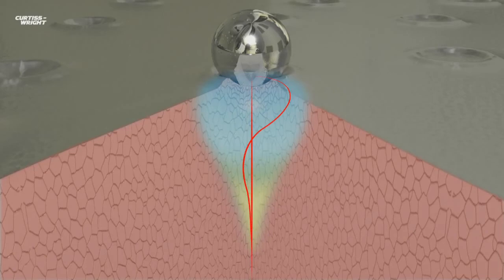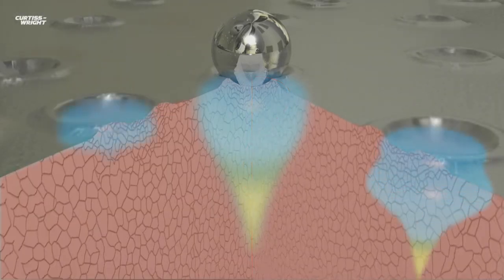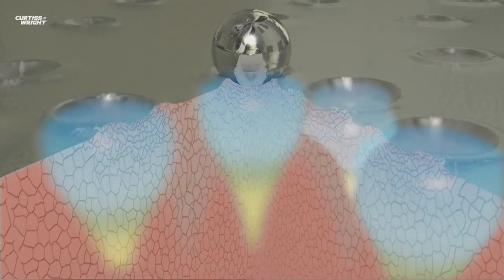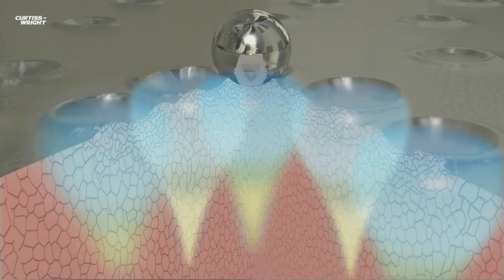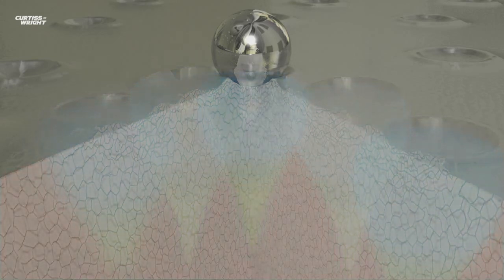Controlled shot peening can remove tensile stresses induced by machining, welding or heat treatment. Results following controlled shot peening show a dramatic improvement in both the life and strength of components, welds and materials.